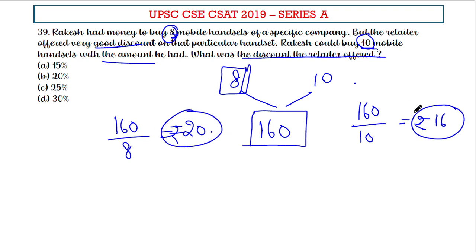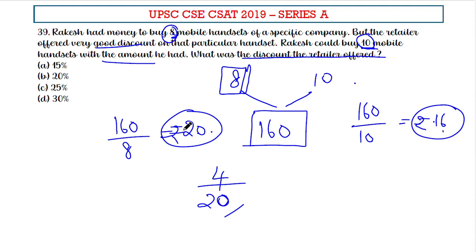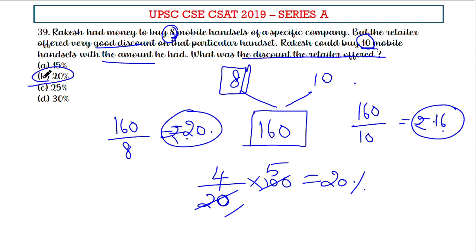All we have to do is find the percentage discount. 20 has become 16, which means a discount of 4 rupees on each handset. So 4 upon 20 — because we find the discount percentage on the original price — into 100, which gives 20% discount offered by the retailer. Therefore option B is the right answer. Thank you.